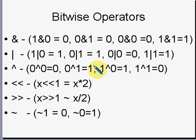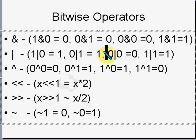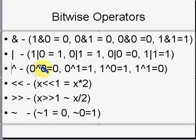The first operator is the ampersand — binary AND. With binary AND, one AND one is one, and everything else is zero. With binary OR, zero OR zero is zero and everything else is one. With the XOR operator, you get a binary one when both operands are different; if the operands are the same, you get zero.